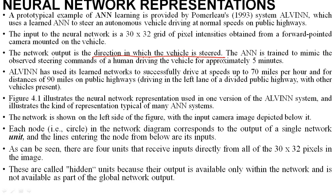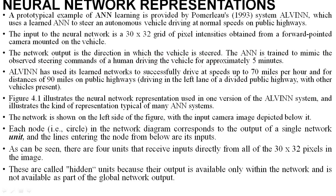The artificial neural network is trained to mimic observed steering commands of a human driving the vehicle for approximately 5 minutes. ALVINN has used its learned network to successfully drive at speeds up to 70 miles per hour. They have tested this system practically, and the driverless car moved at the speed of 70 miles per hour for a distance of 90 miles on public highways.